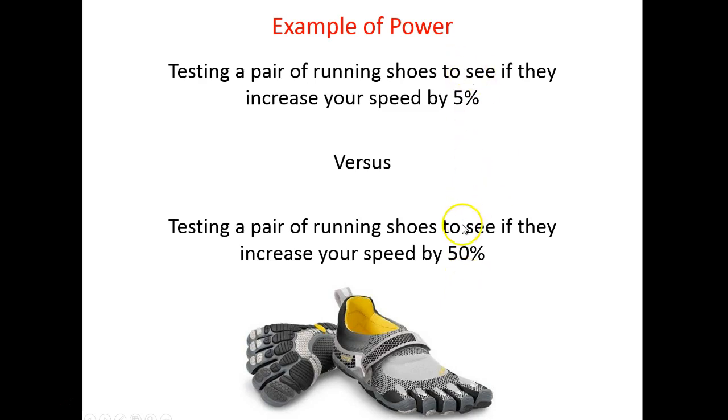My question to you, which one of these two is going to have more power? That means a smaller chance of a Type II error when there's a 5% difference or a 50% difference. The answer is going to be right here with that 50% difference, okay?